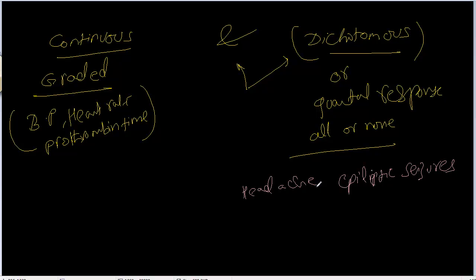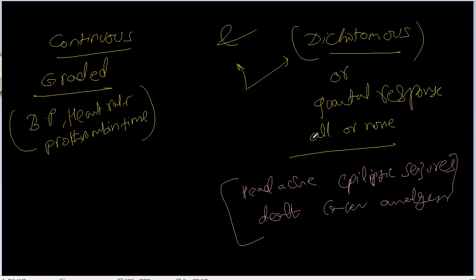For example, a person is either suffering with a headache or not — yes or no. Similarly for epileptic seizures: the patient has seizures or he doesn't. Or cancer: the patient is having cancer or he's not. And for death: either the patient is alive or he is dead. It's all or none.